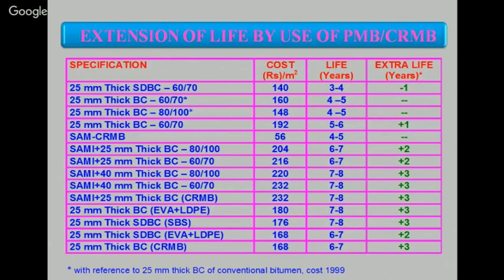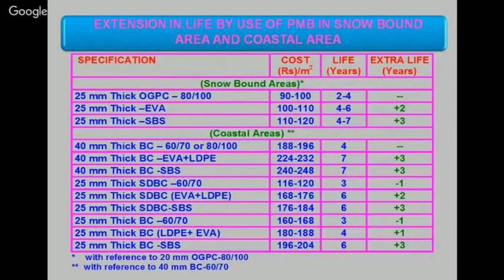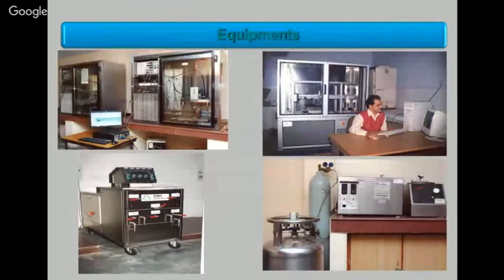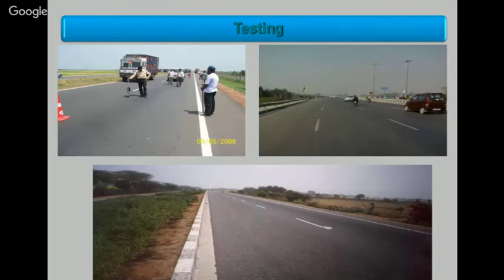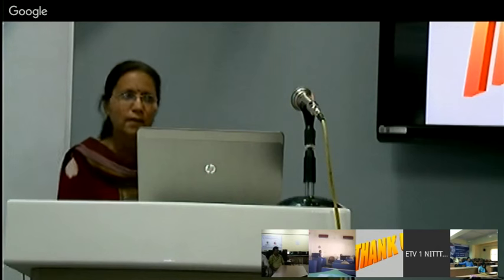Data exists on the extended life achieved using polymer bitumen binders. Field testing equipment such as the Benkelman beam and the Bump Integrator for roughness measurement are used the same way as for conventional roads. Thank you all for patiently listening, and thanks to Professor Duggal for the invitation.